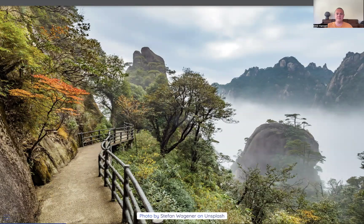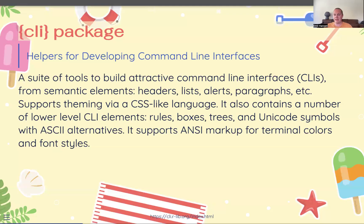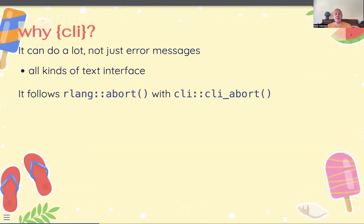I'll be using the CLI package. CLI stands for command-line interface, and it gives you a much richer collection of functions and functionality to create things in the terminal interface. The styled output in your console can do things like lists, headers, paragraphs, all with styling and theming. You can do rules and trees and all these different things. I'll just be focusing on error messages today, but we also use it for making really nice print methods for some of our objects.